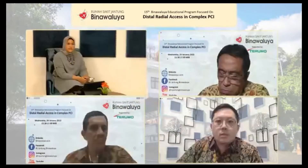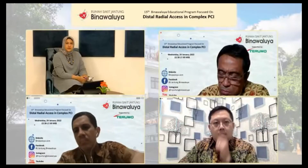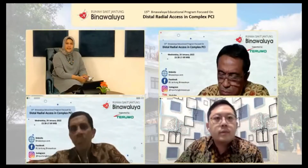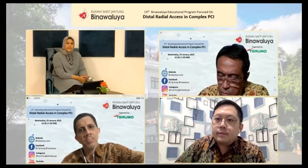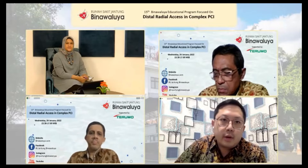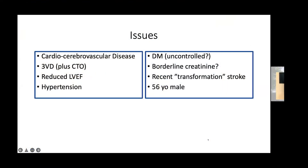Kira-kira apa yang bisa dilakukan terkait dengan topik kita hari ini, aksesnya kira-kira bagaimana untuk kasus kompleks ini? Jadi ini isu yang kita lihat ada di sisi kiri dari masalah kardiovaskularnya, kemudian di sisi kanan ada comorbid — diabetes, kreatinin 1,2, ada transformasi stroke, dan perlu dipikirkan usia pasien tersebut masih relatif muda, laki-laki.